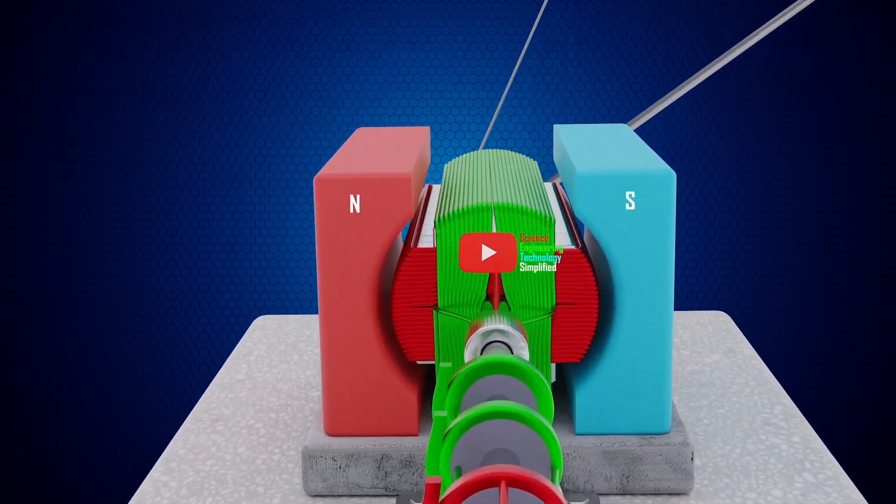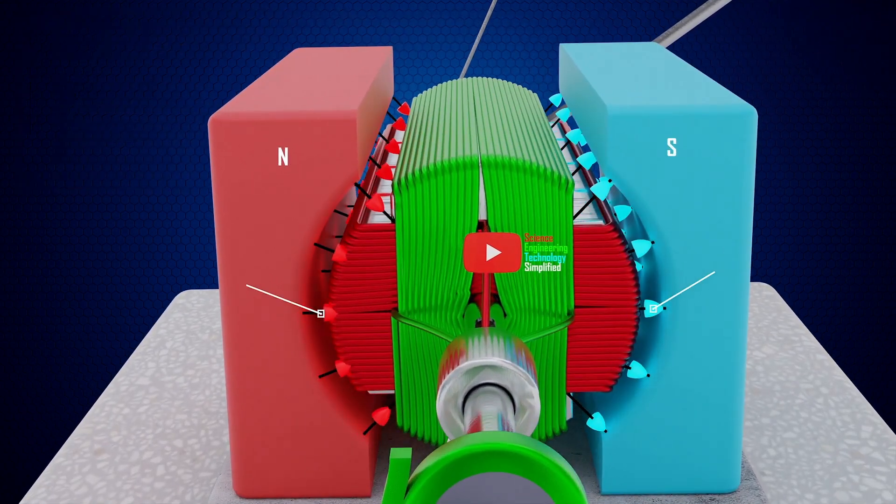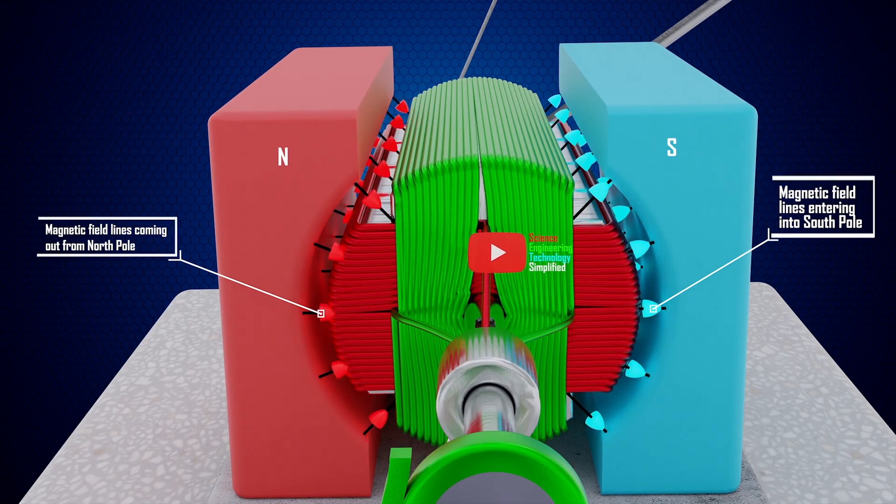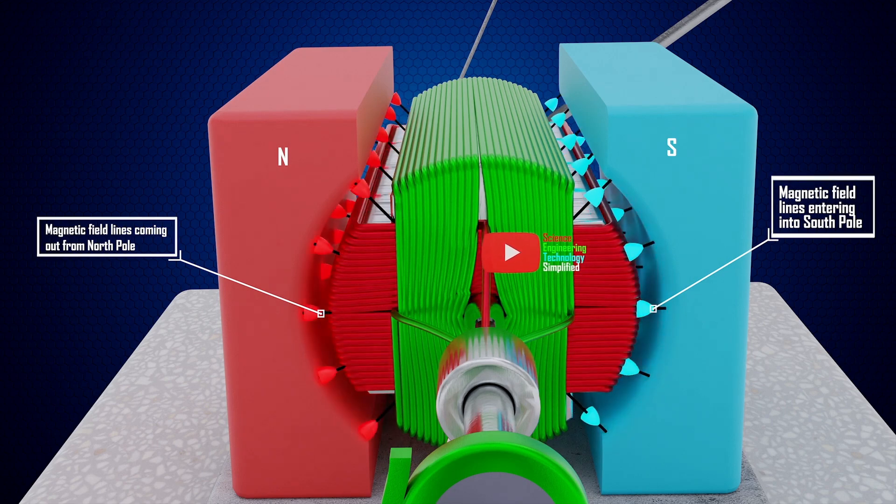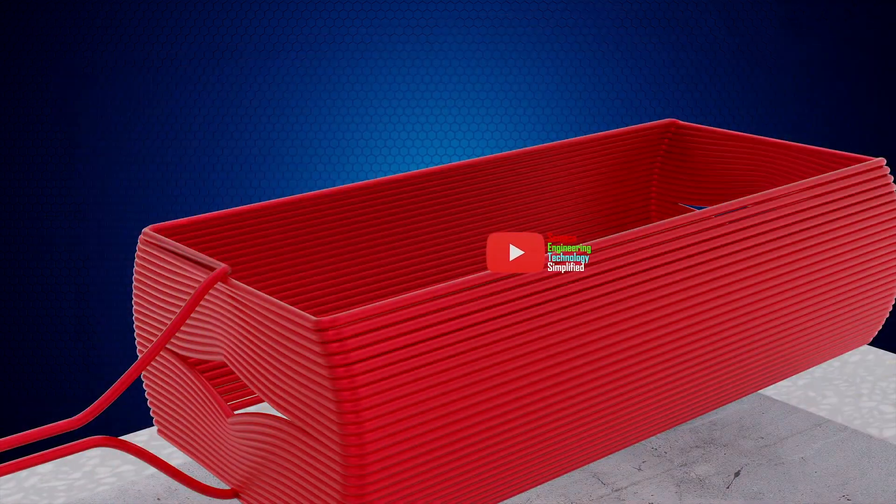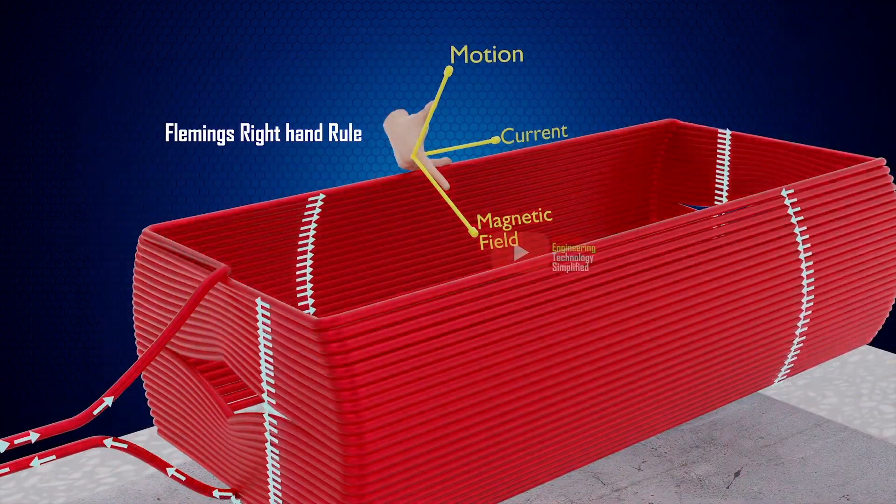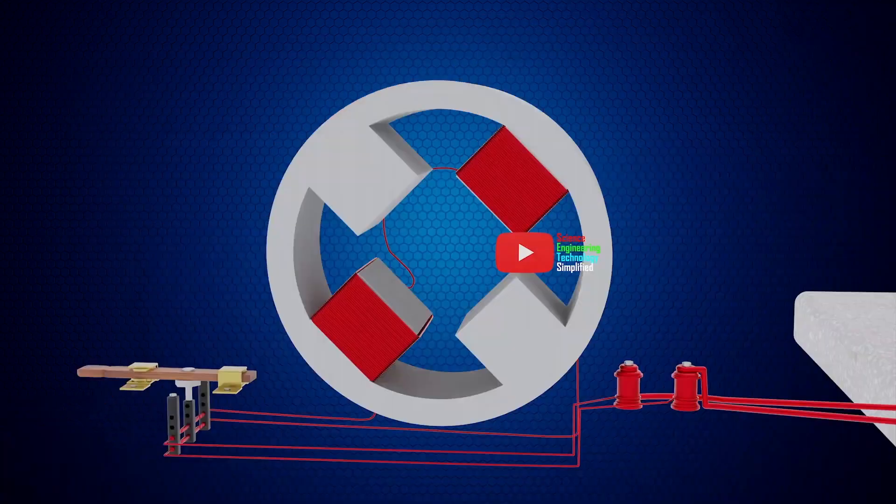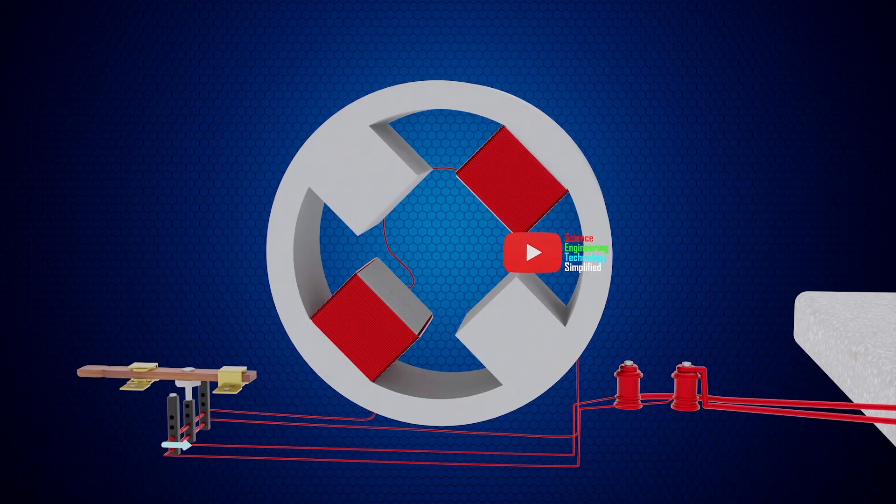Suppose the coils of the generator are in this position. We can see that only the red coil cuts the magnetic field lines and not the green coil. Therefore, the current will be induced only in the red coil. The direction of this induced current is given by Fleming's right-hand rule. This induced current will flow through the red coils of the field magnets of the motor, generating two magnetic fields in the motor.